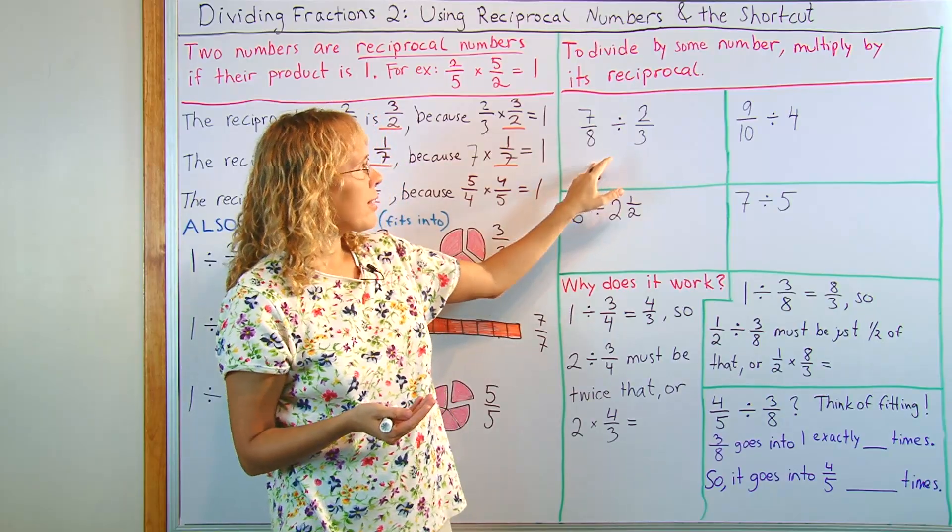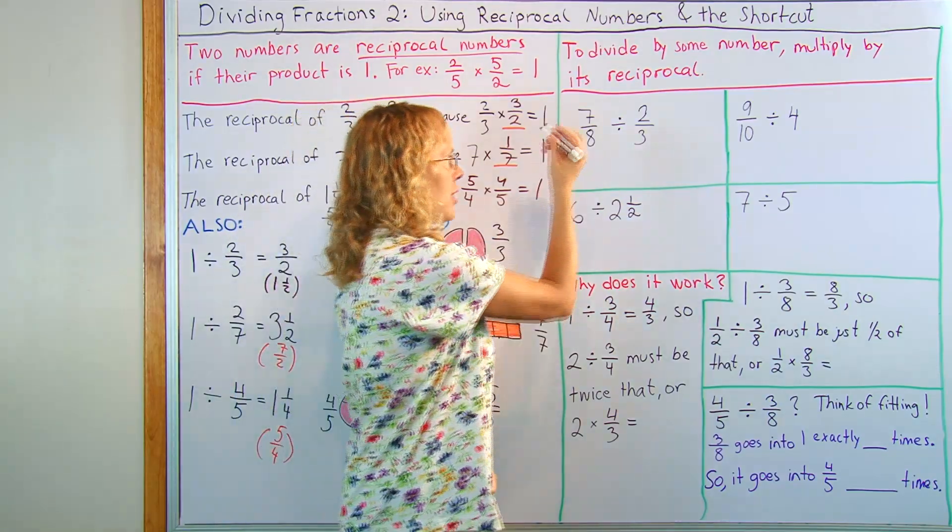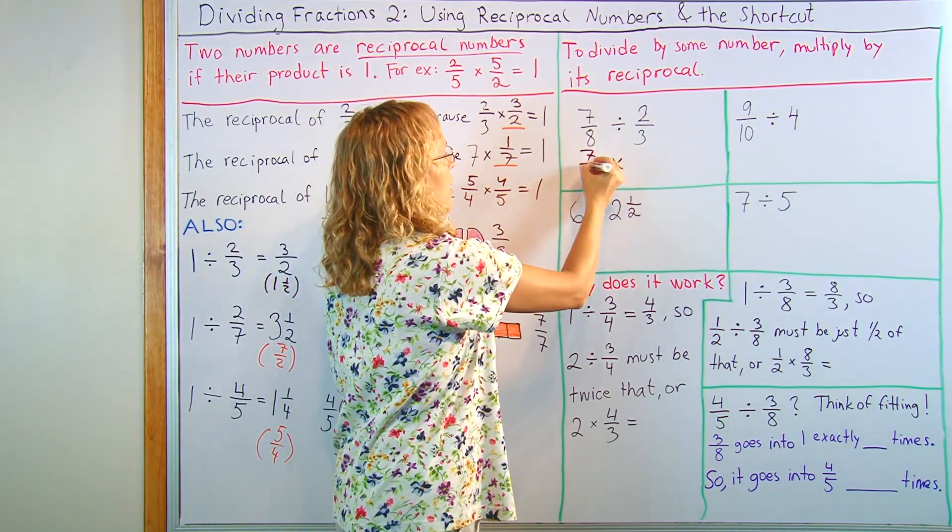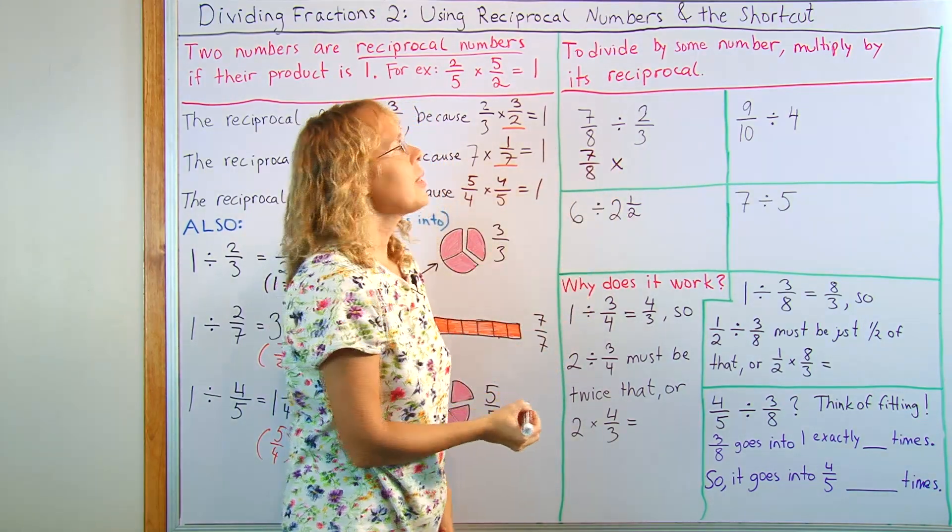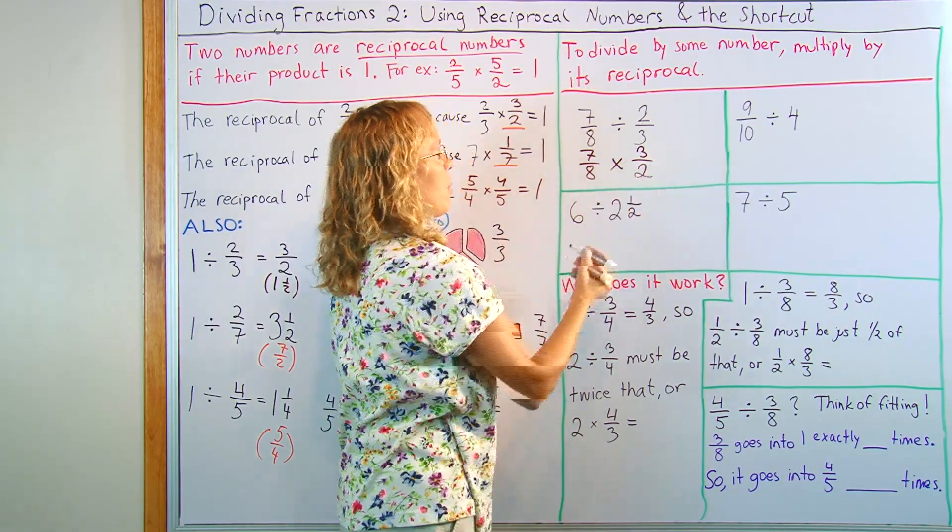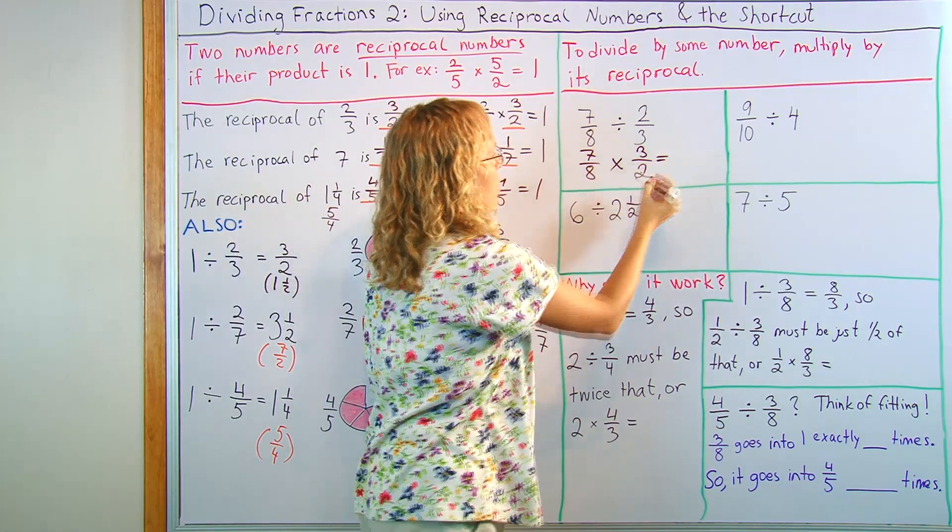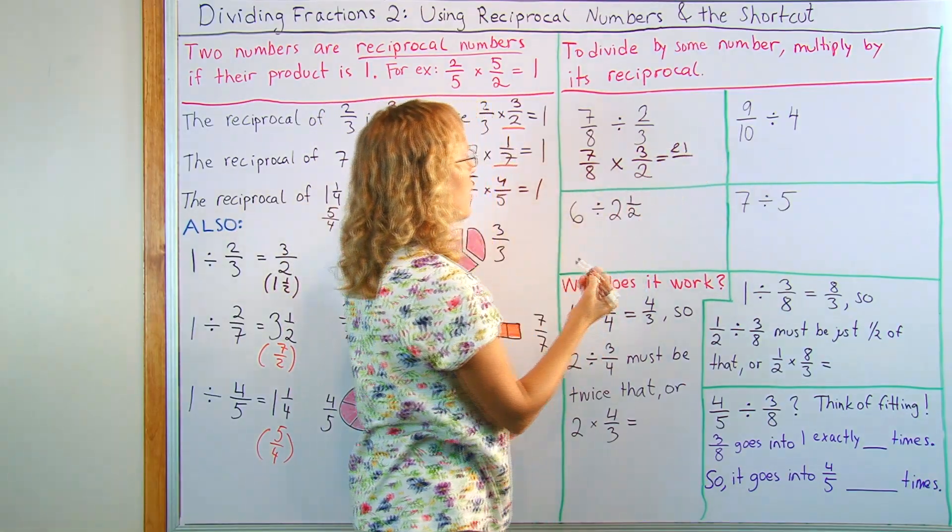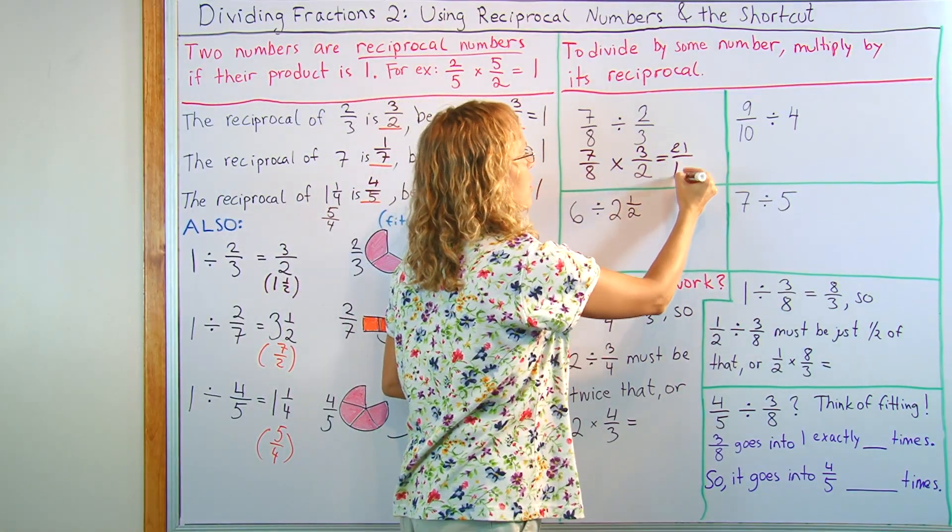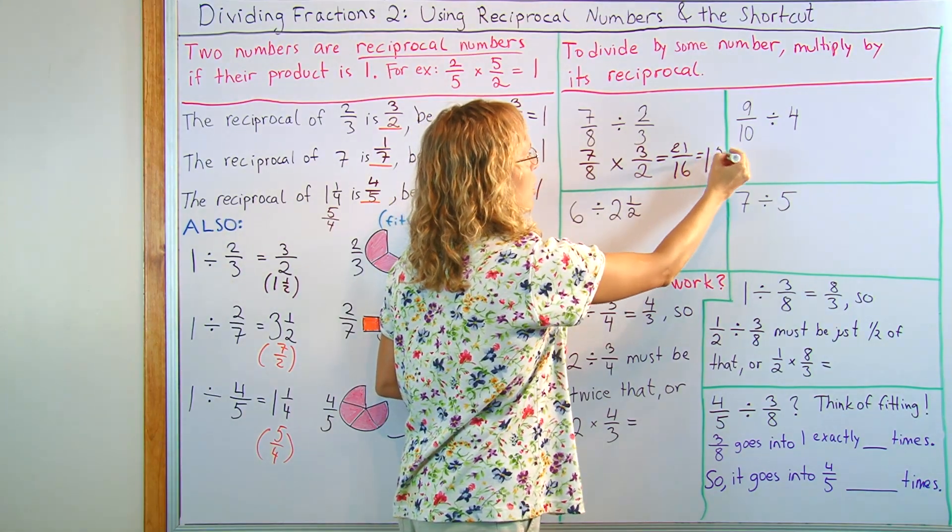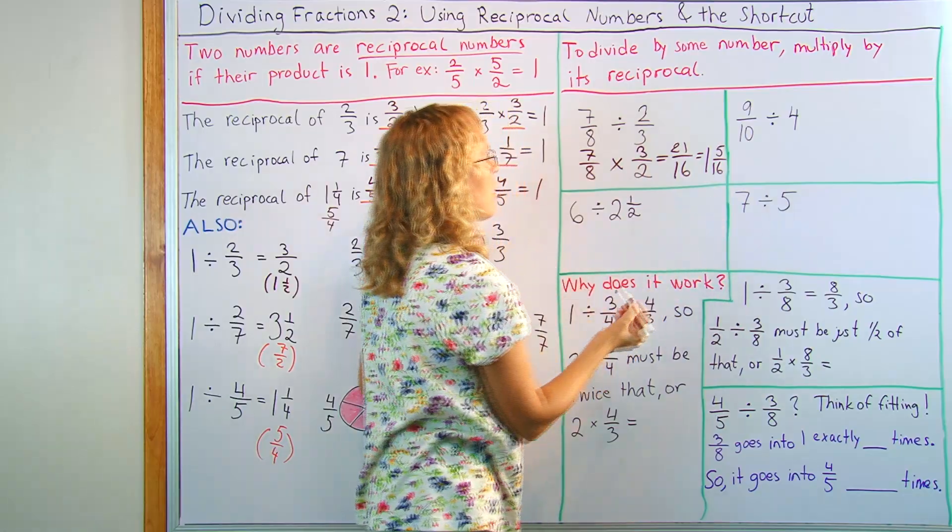For example, seven-eighths divided by two-thirds. Instead of dividing, we're going to change it to a multiplication problem. Seven-eighths is going to get multiplied by the reciprocal of this, or three over two. You flip it. And now we multiply normally, seven times three is twenty-one, and then eight times two, excuse me, sixteen. Which, this is then one whole and five sixteenths.